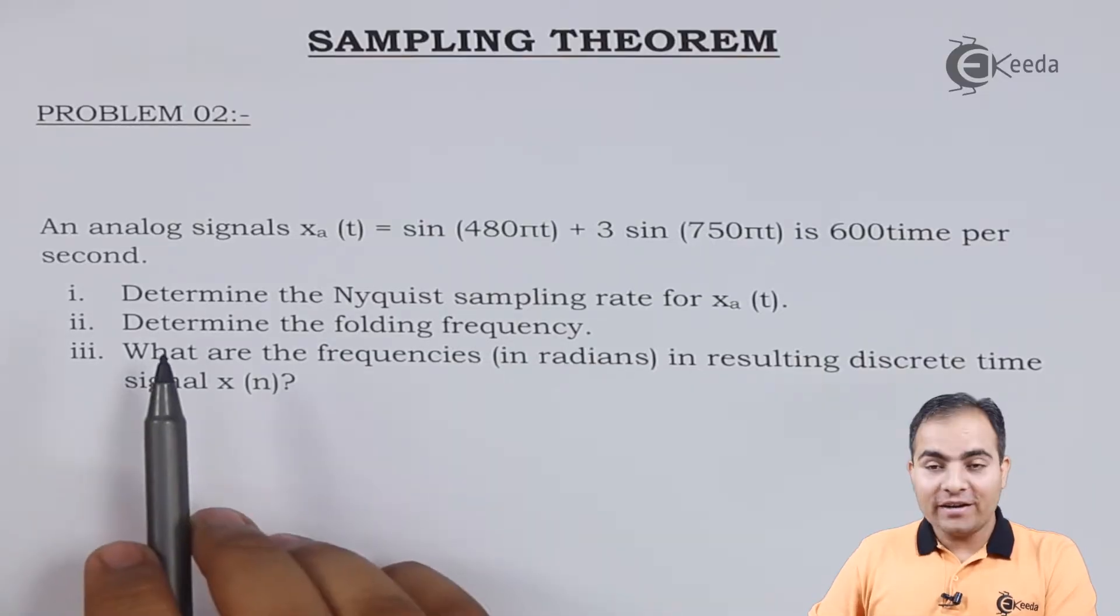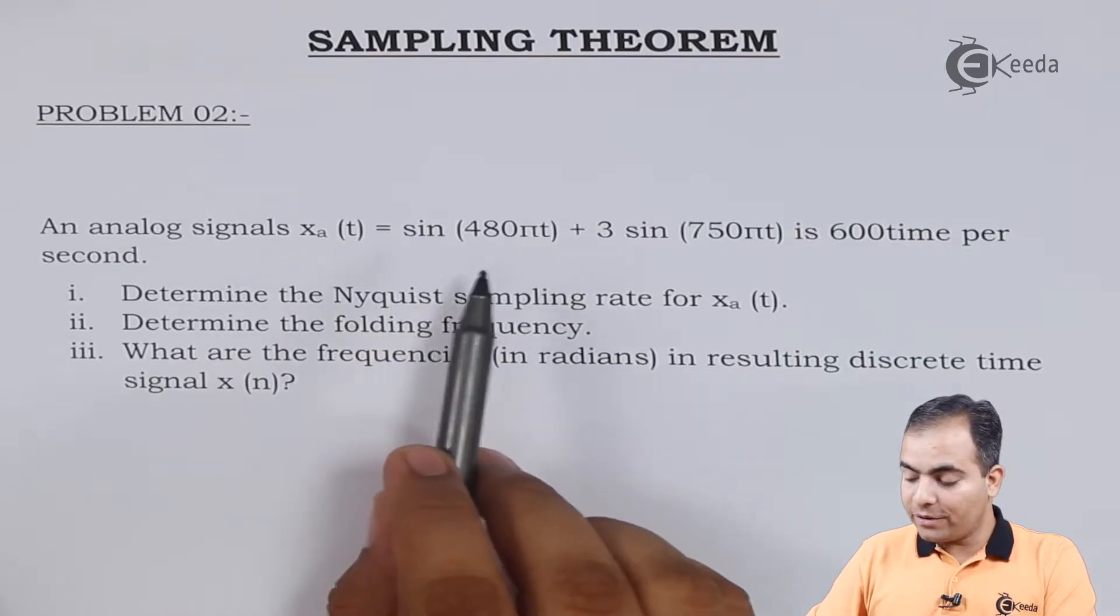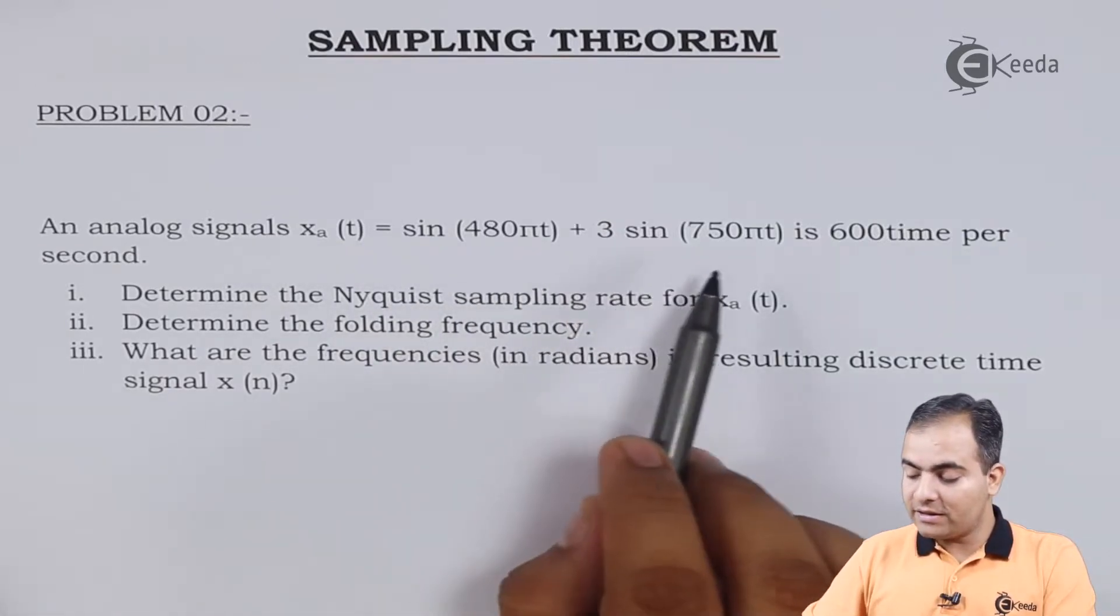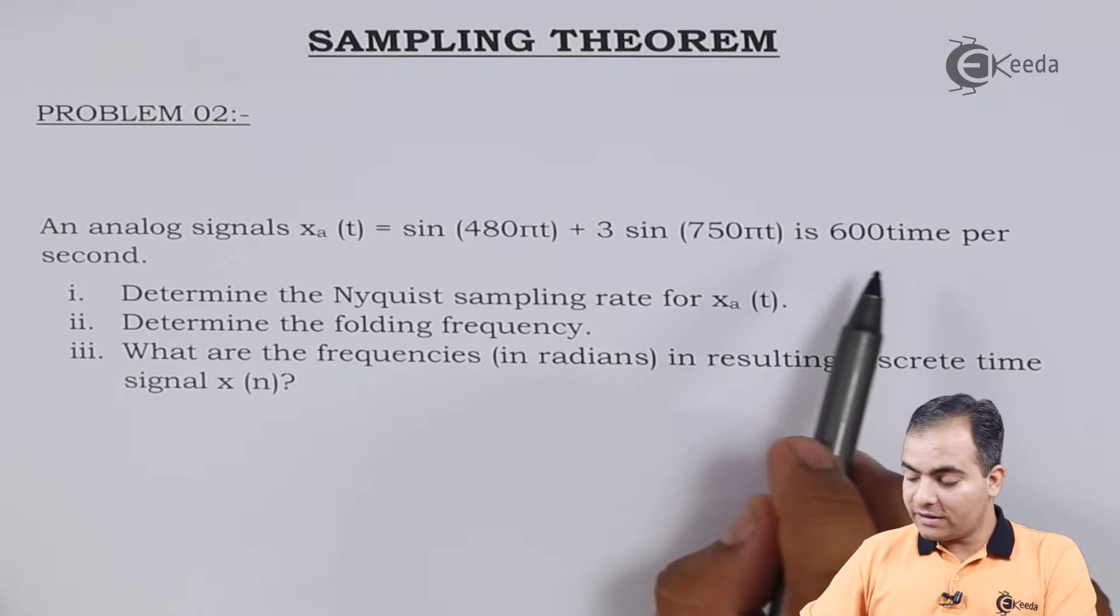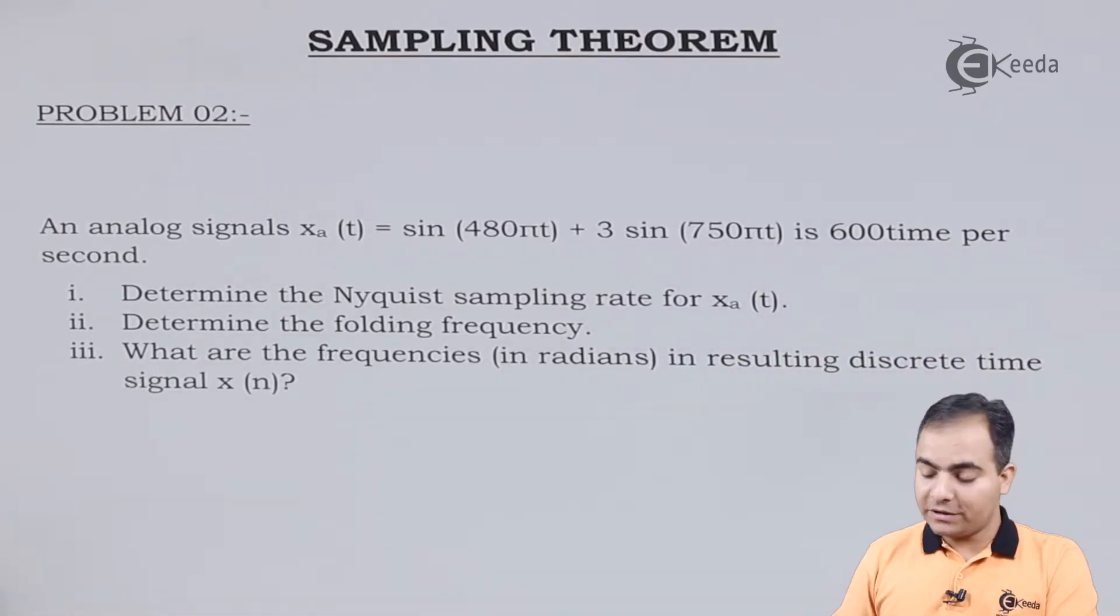Problem number two: An analog signal xa(t) is given as sin(480πt) + 3sin(750πt), sampled at 600 times per second. This is the sampling frequency given in the question.